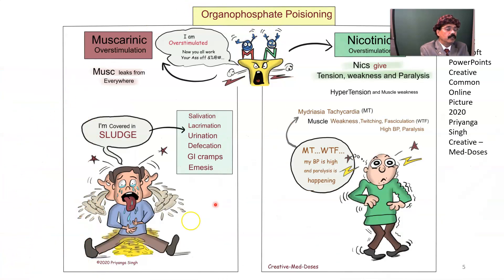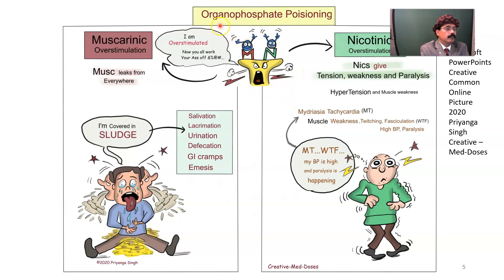Signs and symptoms of organophosphate poisoning can be divided into three broad categories: muscarinic effect, nicotinic effect, and central nervous system effect. For CNS stimulation, the person who is poisoned will have headache, nausea, dizziness, convulsions, and even coma.